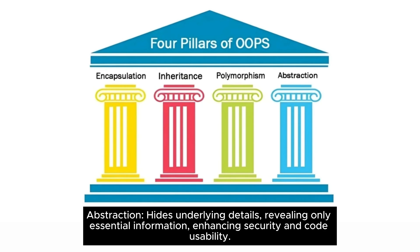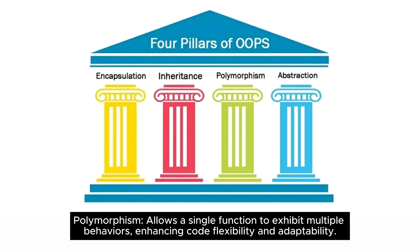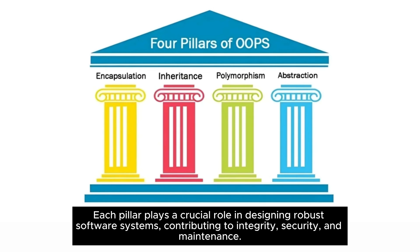Abstraction hides underlying details, revealing only essential information, enhancing security and code usability. Polymorphism allows a single function to exhibit multiple behaviors, enhancing code flexibility and adaptability. Each pillar plays a crucial role in designing robust software systems, contributing to integrity, security, and maintenance.